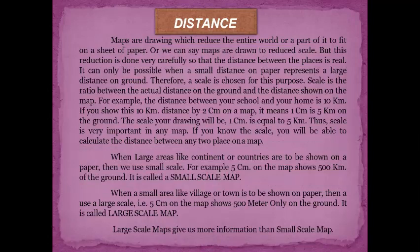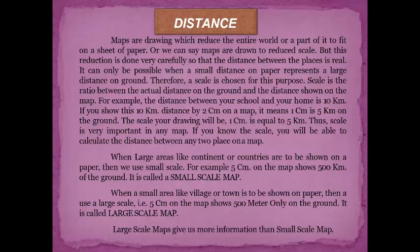For example, the distance between your school and your home is 10 km. If you show this 10 km distance by 2 cm on a map, it means 1 cm equals 5 km on the ground, so the scale is 1 cm = 5 km. Thus, a scale is very important in any map — if you know the scale, you can calculate the distance between any two places. When large areas like continents or countries are to be shown on paper, we use a small scale, and when a small area like a village or town is to be shown, we use a large scale. Large scale maps give us more information than small scale maps.